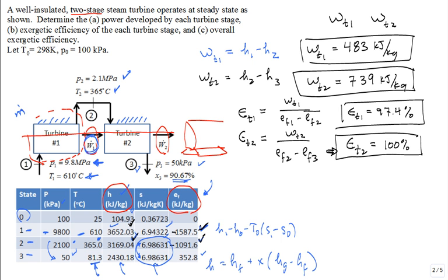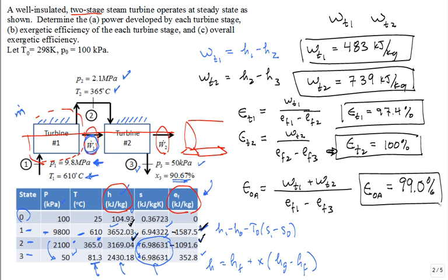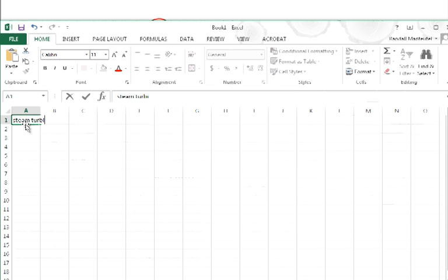What is the overall exergetic efficiency of both of them? Let's just do exergetic efficiency overall. Can you think of a definition for that? The net out divided by the overall change of the flow exergy from the inlet to the outlet. And when you calculate the overall exergetic efficiency, it comes in at 99.0%, somewhere in that vicinity. Does that problem make sense?